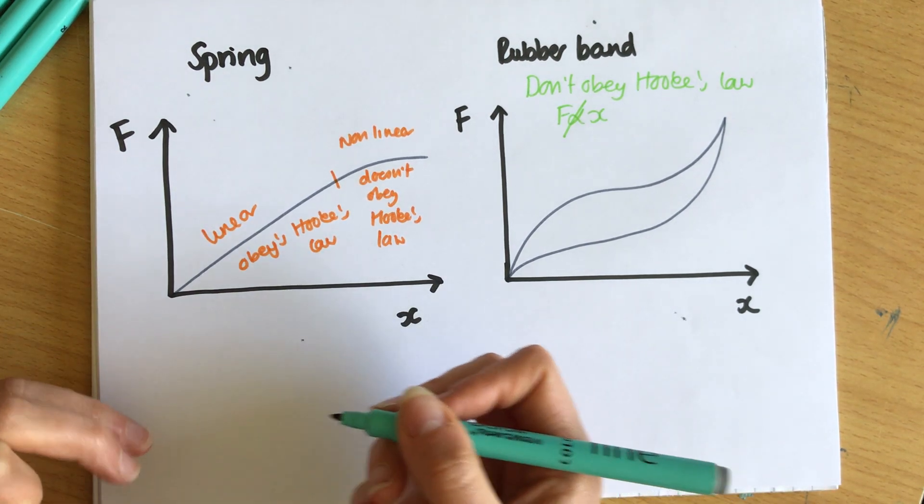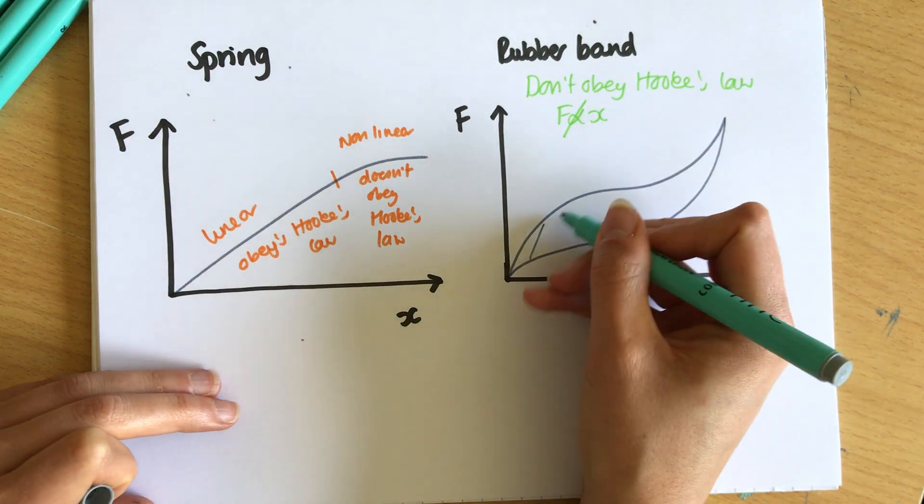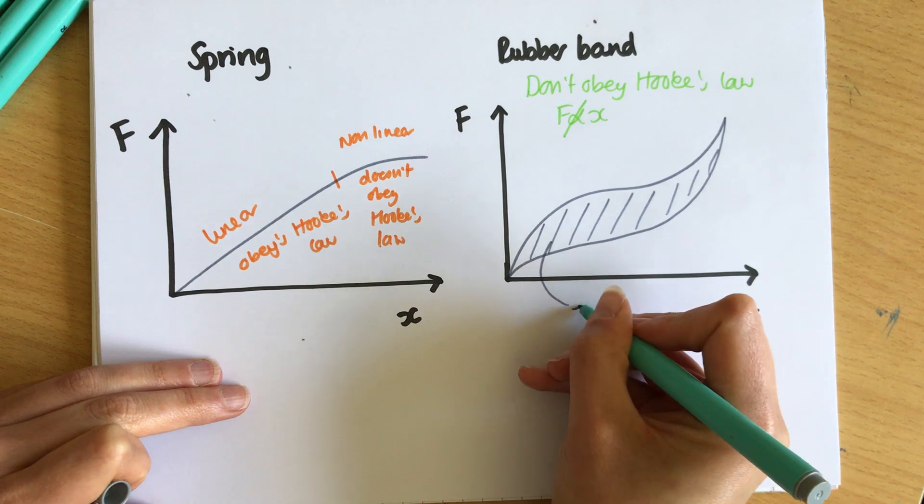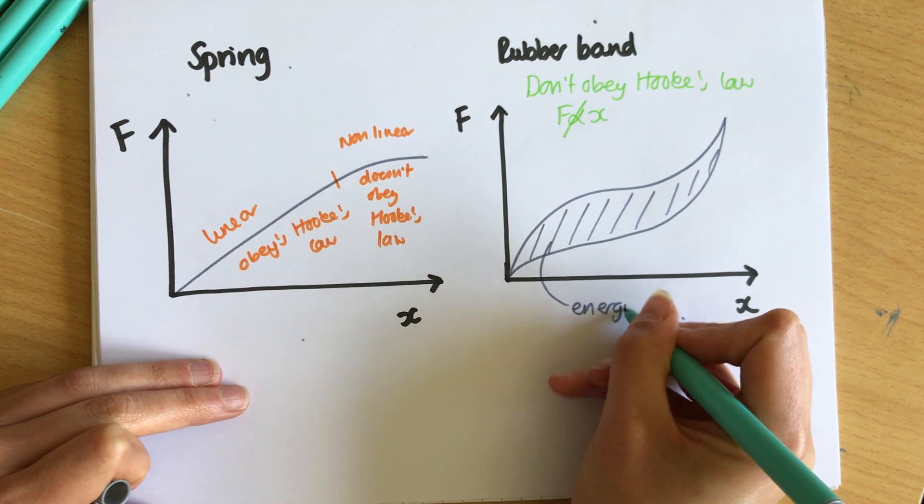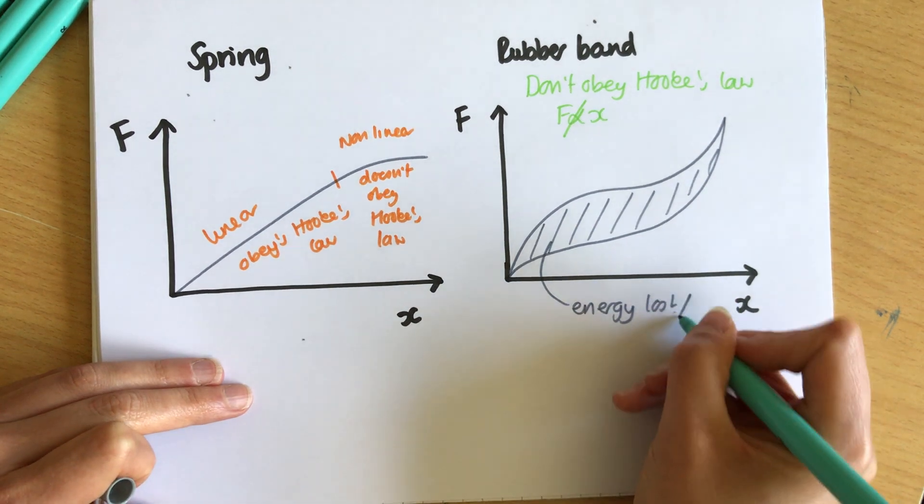But it doesn't quite go back in the same way as it started and this area here—we know the area underneath is energy stored—and this energy here is the energy lost or dissipated to the surroundings when you let the elastic band go.